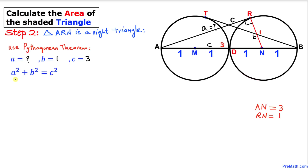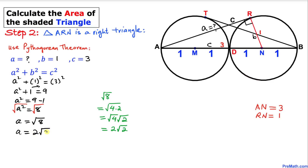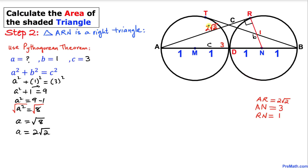Let's fill in the values. We don't know a, so: a² + b² = c² becomes a² + 1² = 3², which gives a² + 1 = 9. Moving 1 to the right: a² = 8. Taking the square root of both sides: a = √8, which simplifies to 2√2. So the length of leg AR is 2√2.